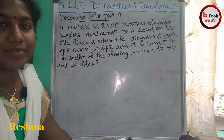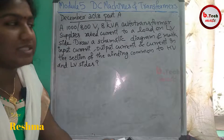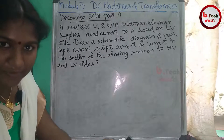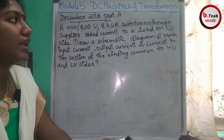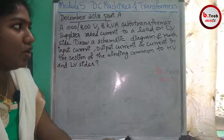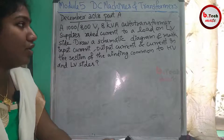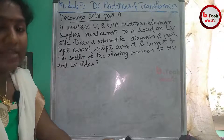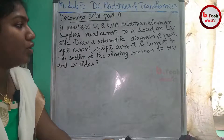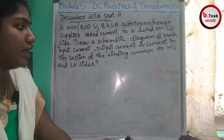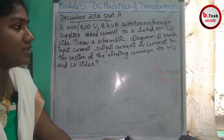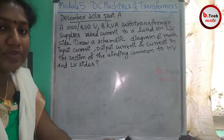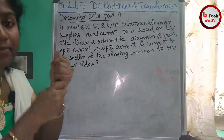We are going to talk about the problem of Part A in December 2018. A 1000/800 volt, 8 kVA auto transformer supplies rated current to a load on the LV side. We need to draw a schematic diagram and mark the input current, output current, and current in the section of winding common to HV and LV sides.